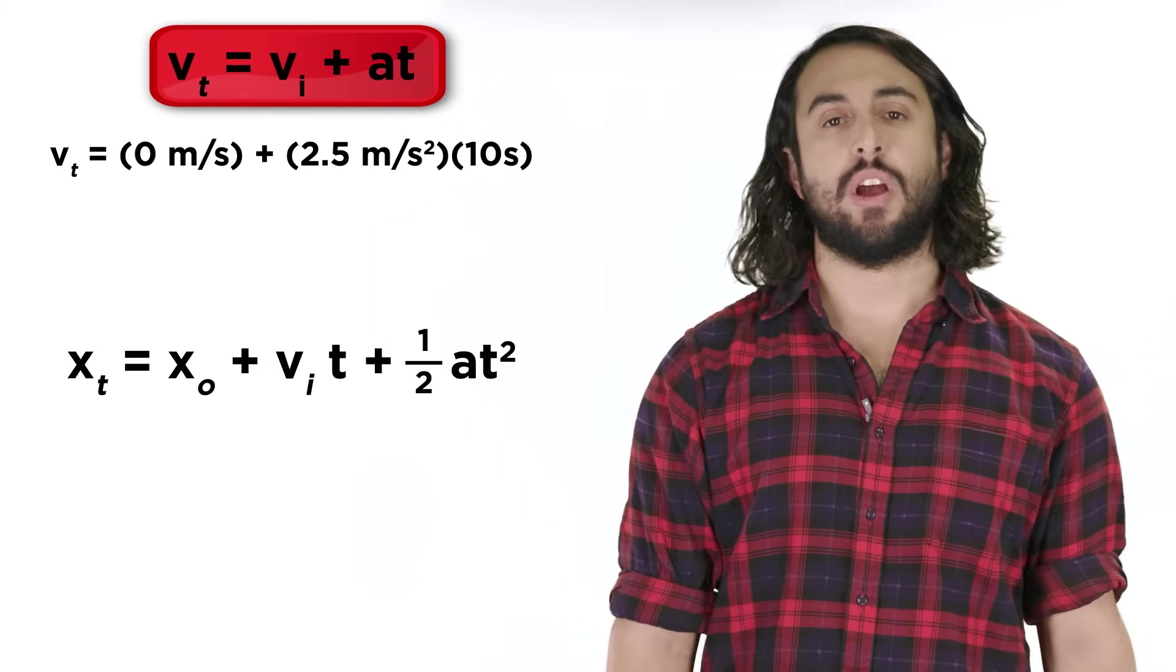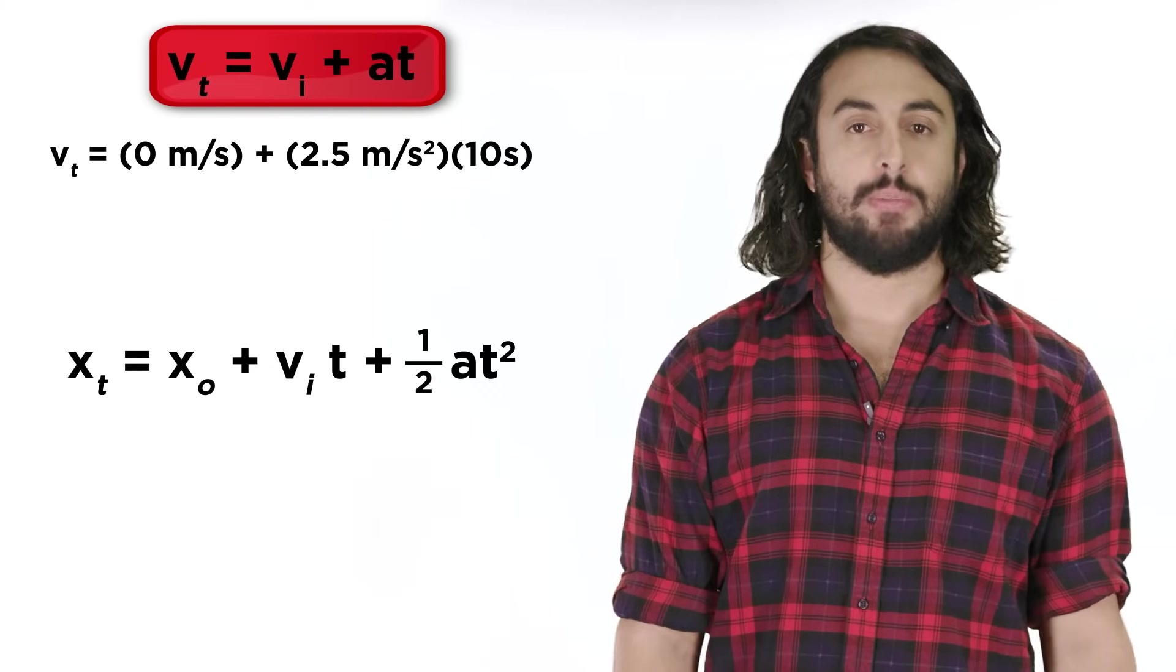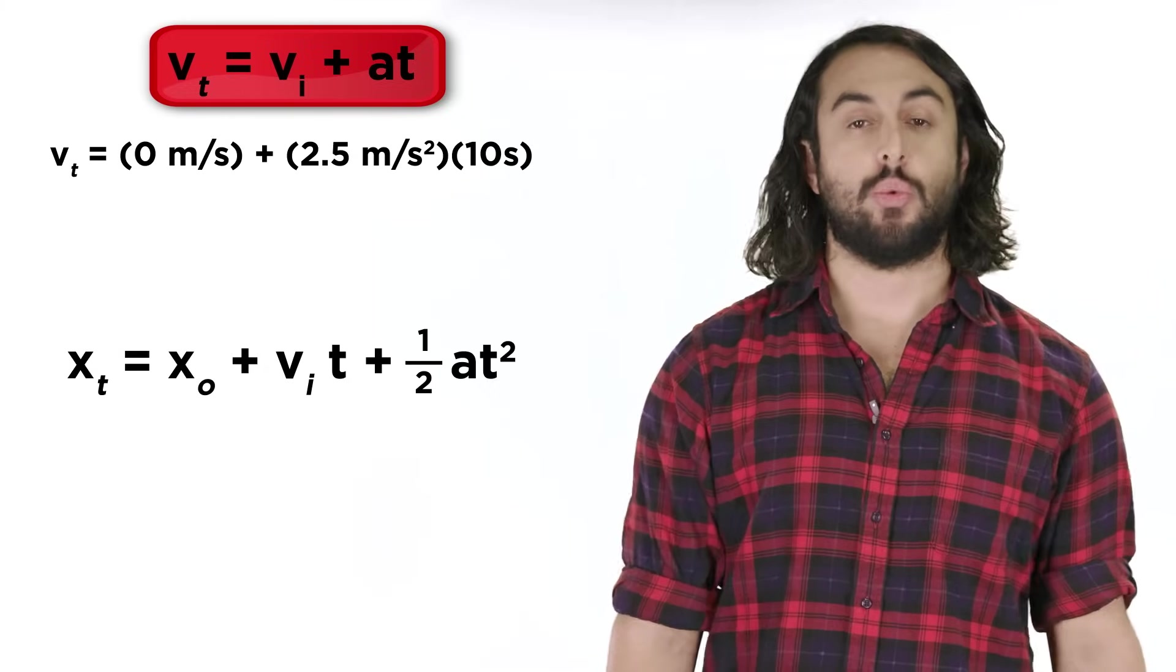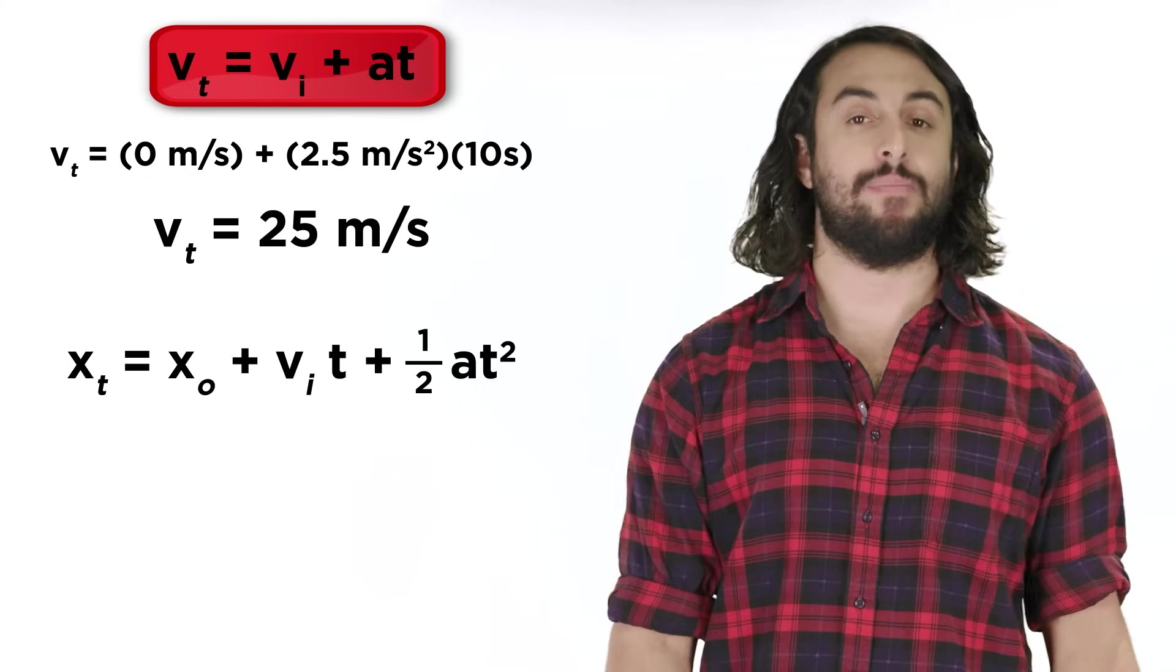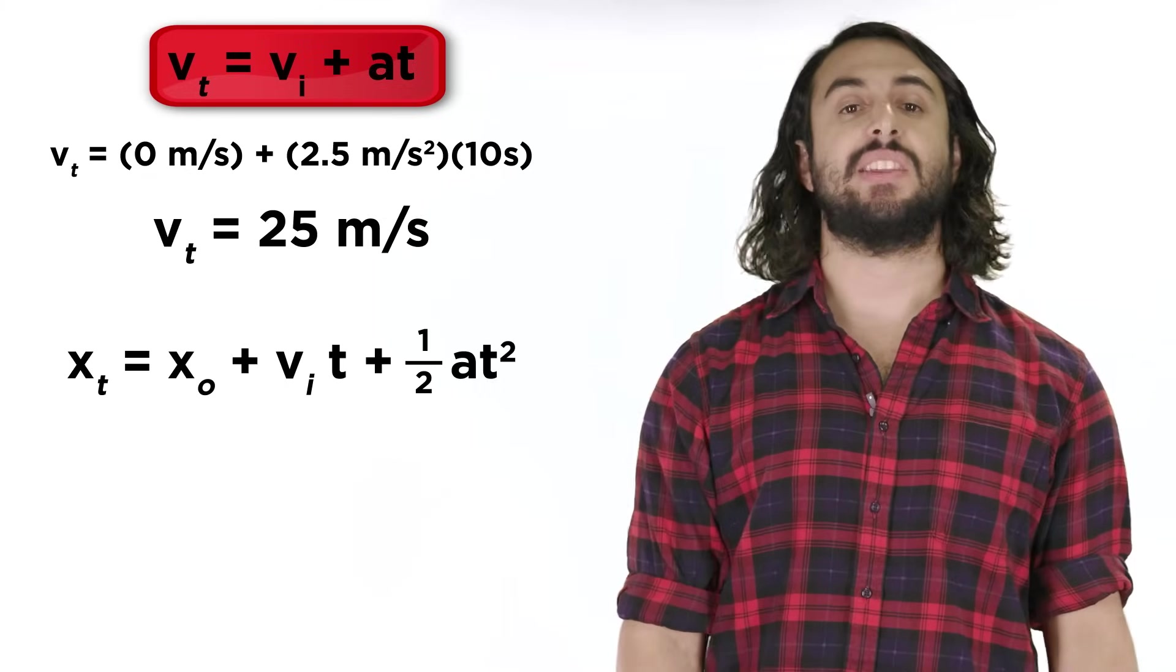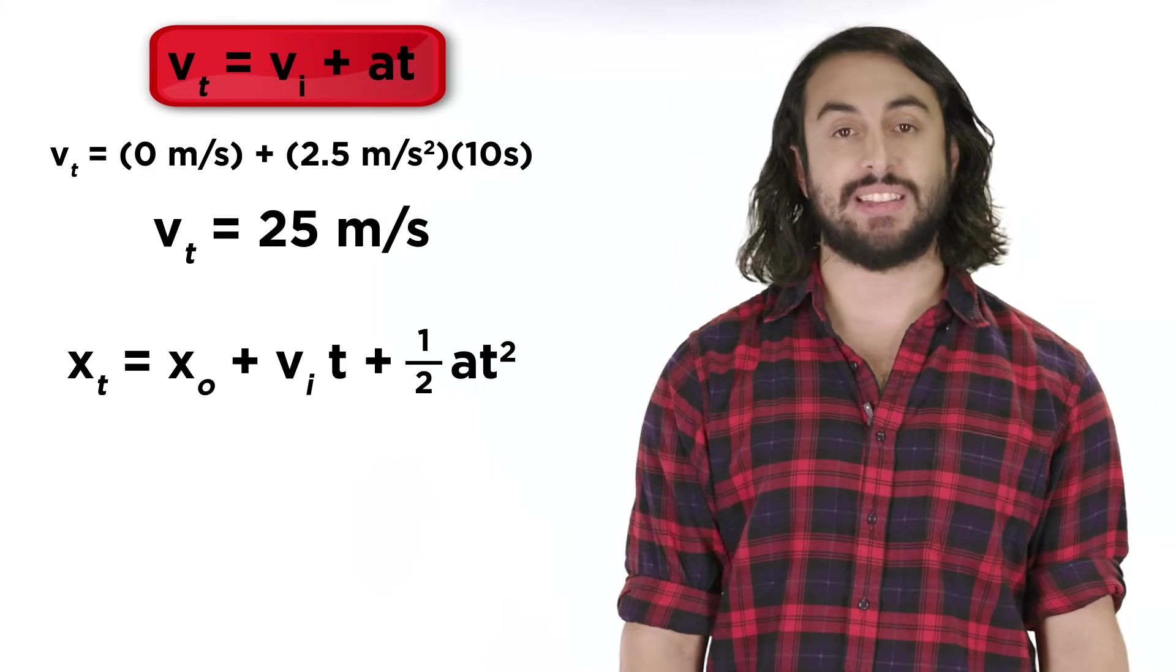For the velocity, we know that the initial velocity was zero, because we were at rest. So we just multiply acceleration by time, and we get 25 meters per second. That is the velocity of the car after ten seconds.